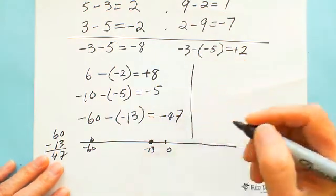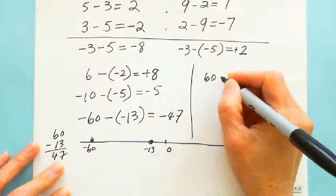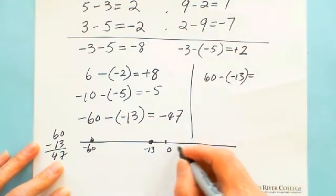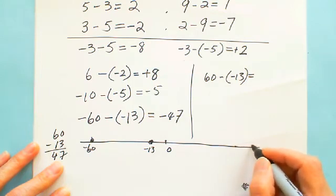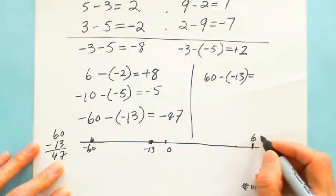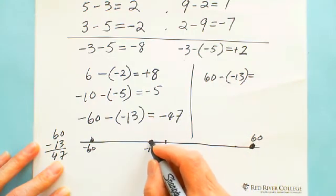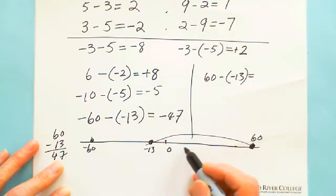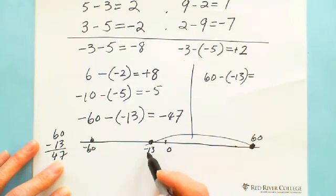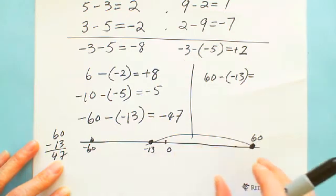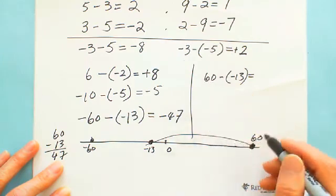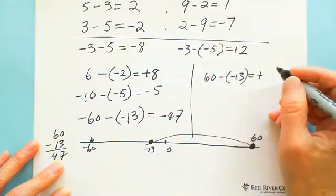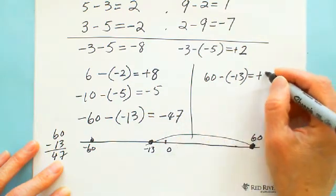If the question is 60 subtract negative 13, you can see 60 is on one side and negative 13 is on the other. Looking for the distance between these two: from 60 to 0 is 60 units, from 0 to negative 13 is another 13 units. You add these two numbers. Also, 60 is on the right side of negative 13, so 60 is greater — you get positive. The answer is positive 73.